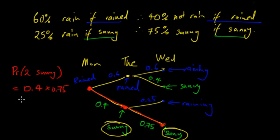Would equal 0.4 times 0.75. Which, assuming we don't have a calculator, will be 4 on 10 times 3 on 4. The 4s cancel, gives us 3 on 10, which is 0.3. So the probability of two days of sunny is 0.3.